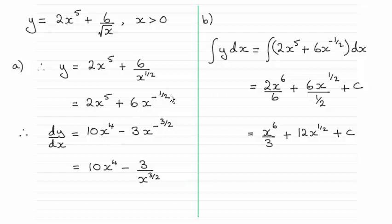For 6x to the minus half, multiply minus half with the 6 to give you minus 3, and then reduce the power by 1.